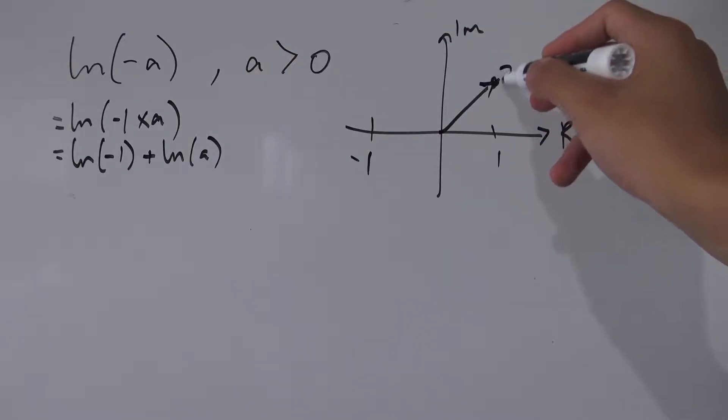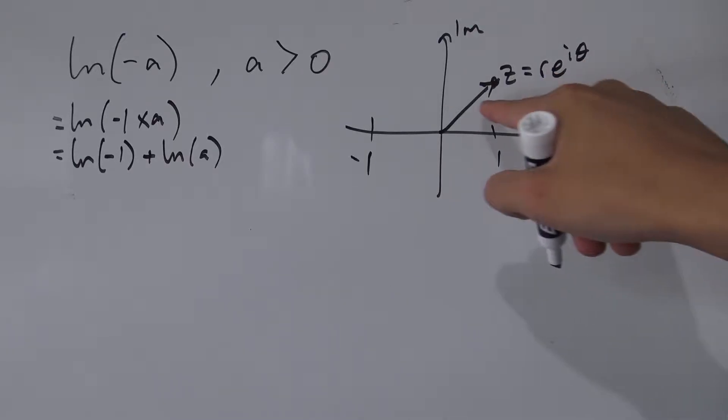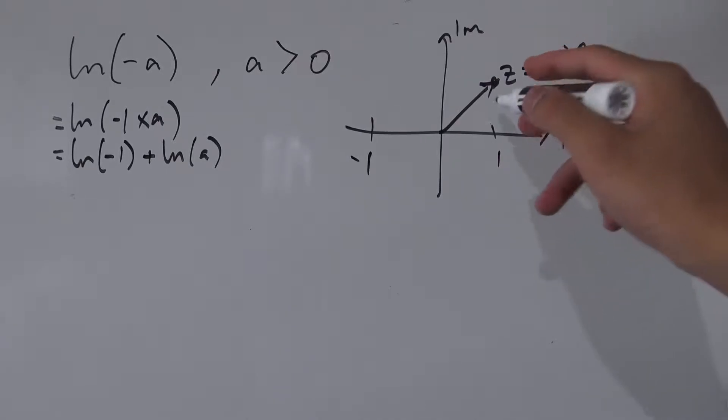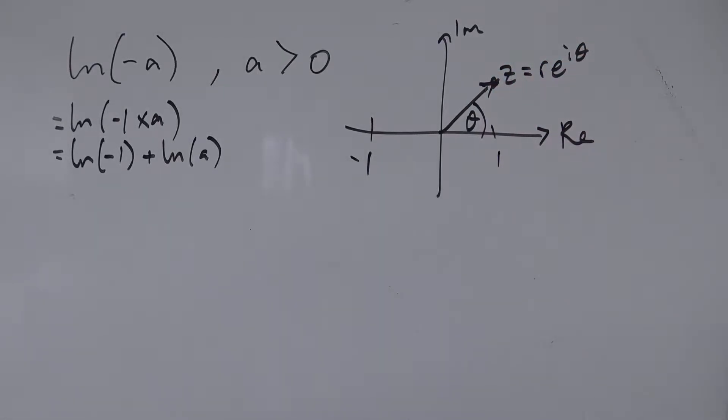If you know how to represent complex numbers in polar form, you know that some complex number z here is nothing but r e to the i theta, where r is the modulus of the complex number and theta is the argument, which is the angle it makes with the positive real axis.